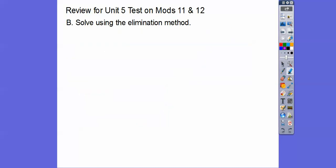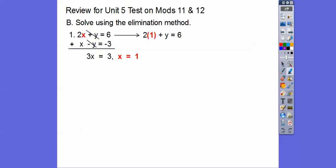Now we'll solve using the elimination method. I like to make the coefficients opposite signs and add the equations together — some teachers prefer subtracting. This one is already set up with a plus y and a minus y, so we add them together. 2x plus x is 3x; 6 plus negative 3 is 3, so x equals 1. Substituting x equals 1 into the top equation, we subtract 2 from both sides and get y equals 4. Our ordered pair is 1 comma 4.